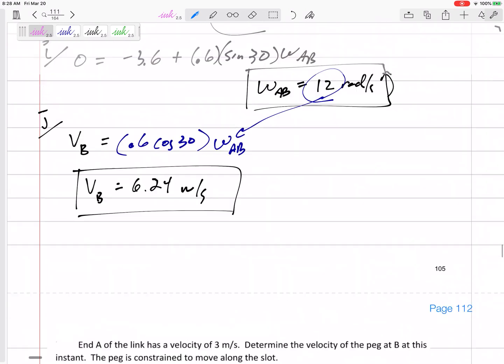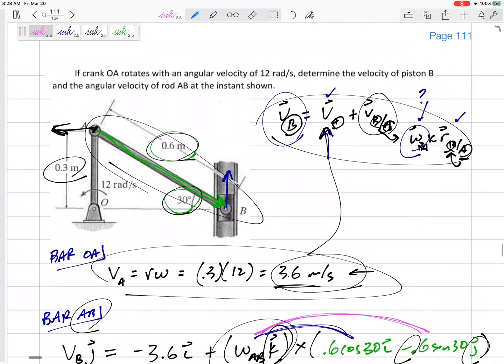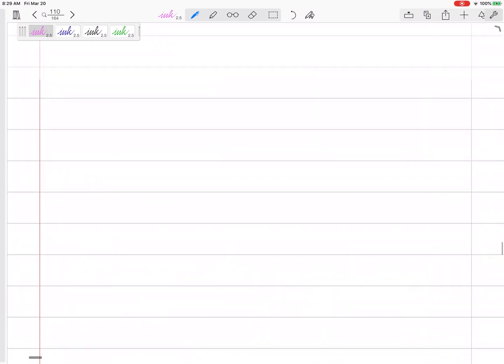What about this one? The velocity is constrained, controlled by that link right there. And then B is just in a slot, so you know that direction of its velocity.